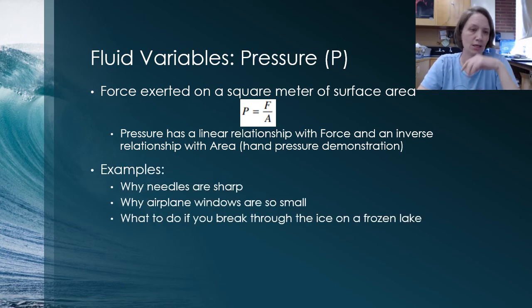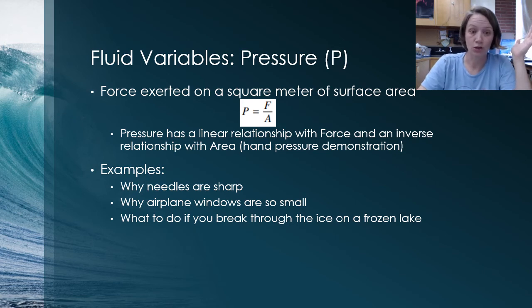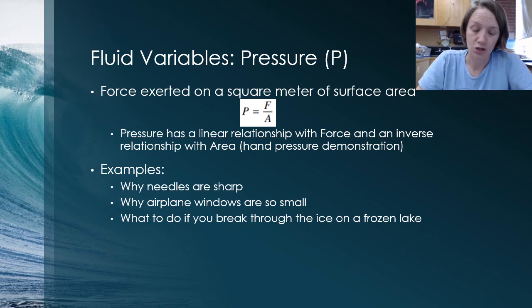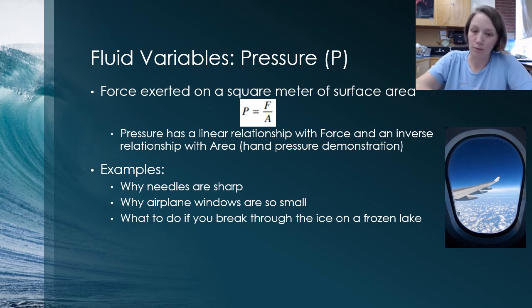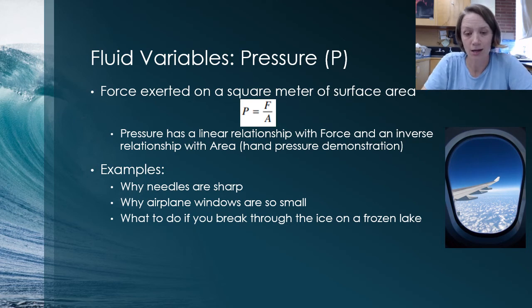This equation is really relevant in the real world. It explains why we have sharp needles at doctor's office. It would be a real bummer to have a needle that was dull because of the relationship between area and pressure. And it also explains why airplane windows are so small, because if they were bigger, the glass would have to resist a lot more force and it would be more likely to break. It also tells you what you should do if you happen to be on a frozen lake and break through the ice. You want to spread your body out over as much area and lay down and crawl across the ice as you possibly can so that you don't push as hard on any little piece of the lake.